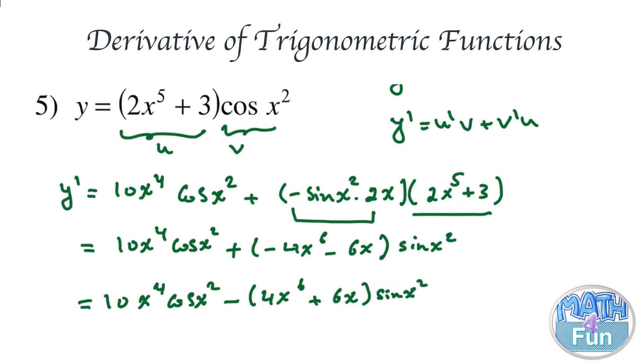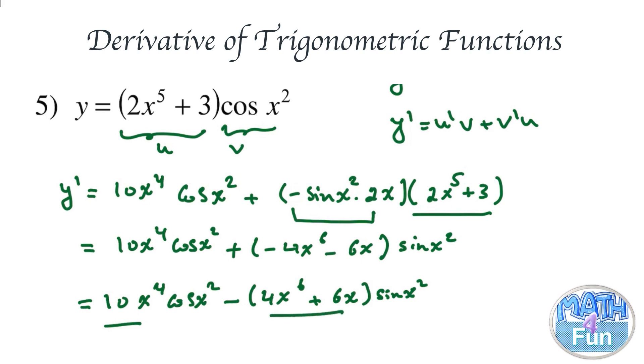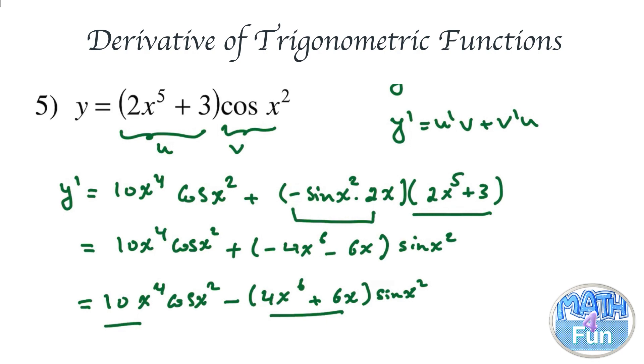You can also factor out 2x as a common factor. All representations would be considered correct.